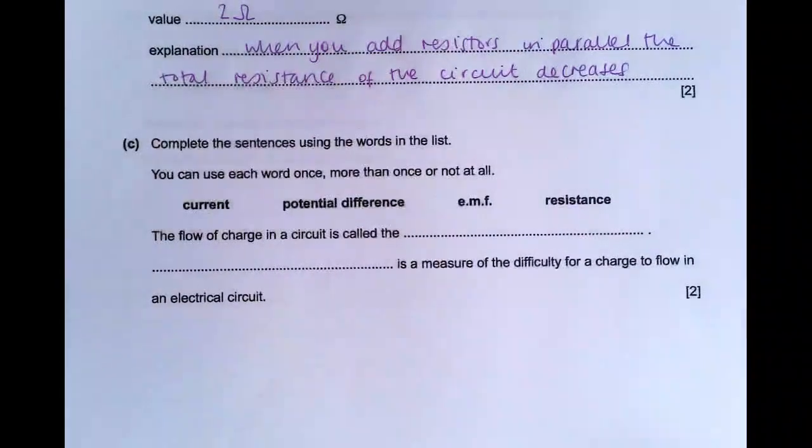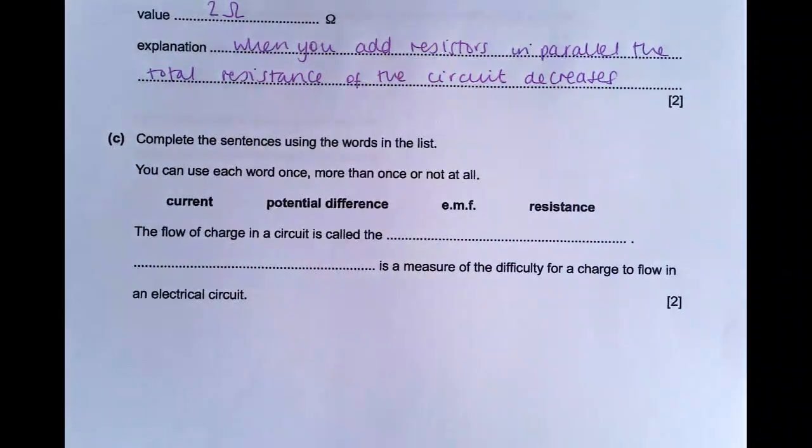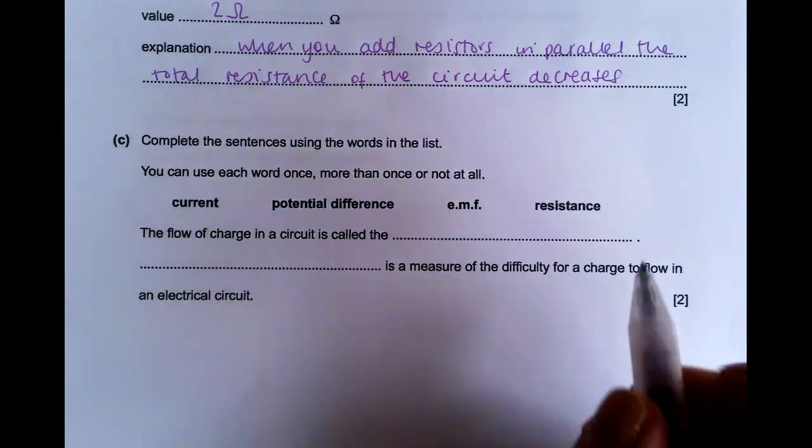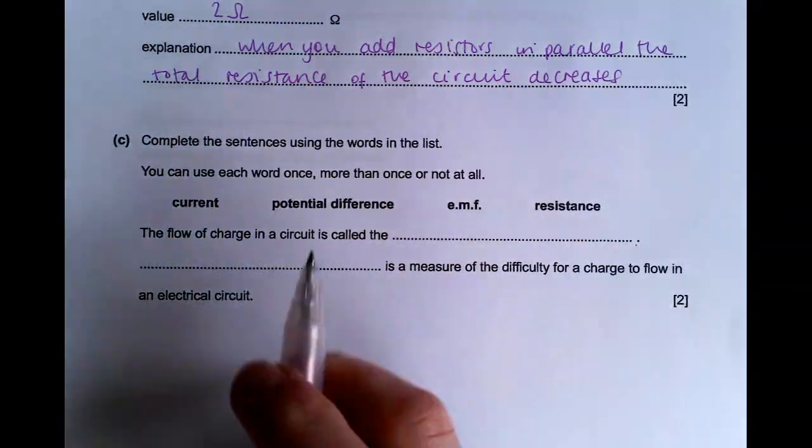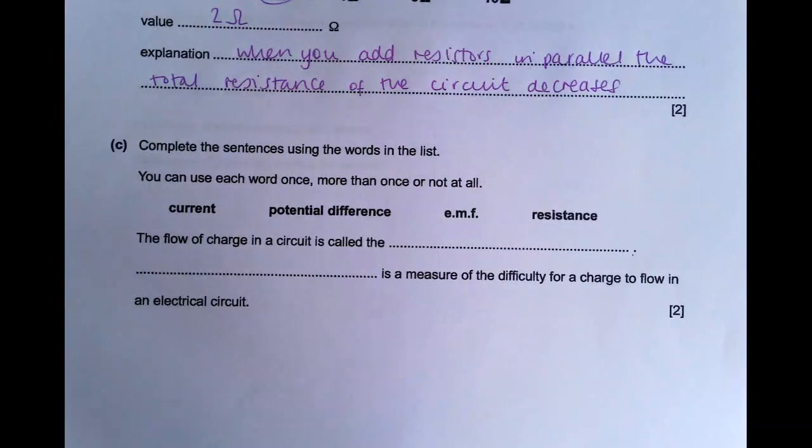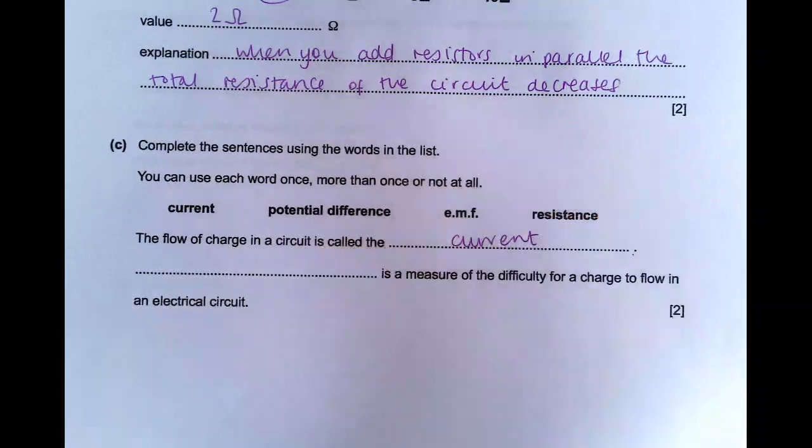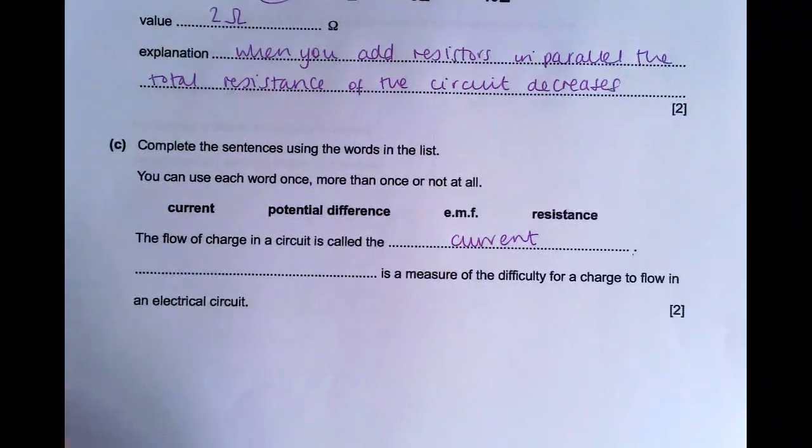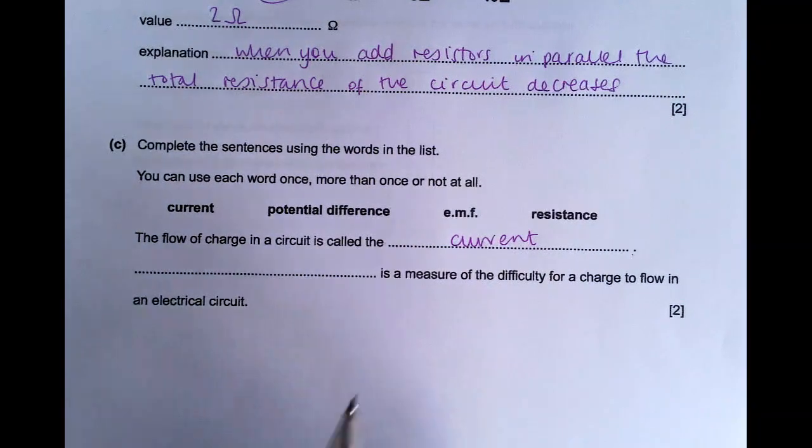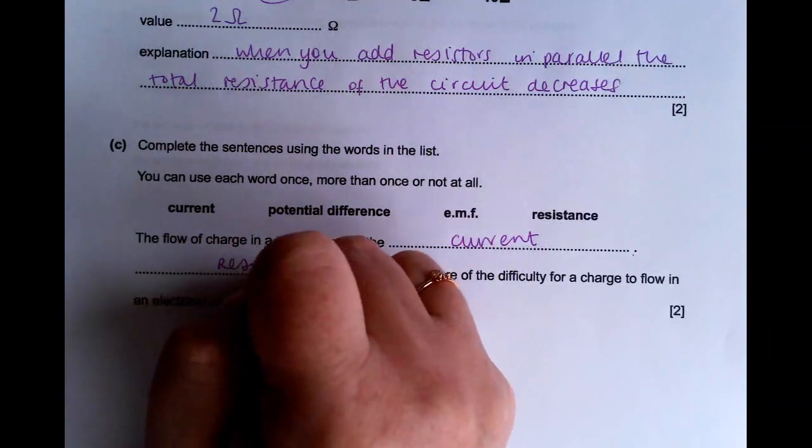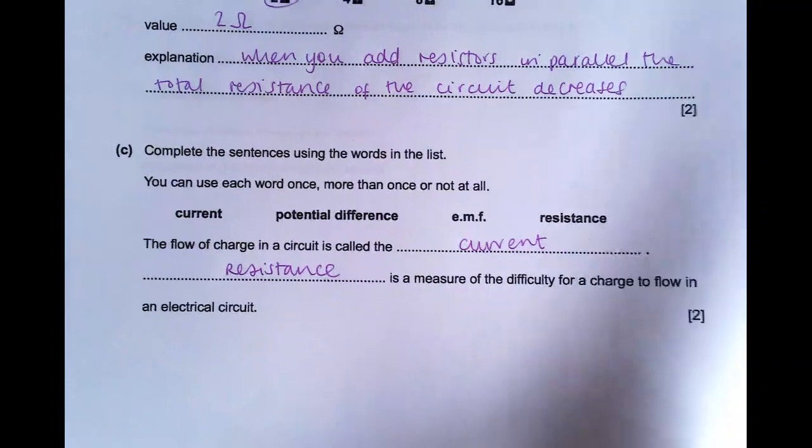Then in part C, you just need to choose the correct words. So the flow of charge in a circuit is called the blank. Something is a measure of the difficulty for a charge to flow in an electric circuit. So the flow of charge is called the current, and resistance is a measure of how difficult it is for a charge to flow. You obviously needed one for each mark there.